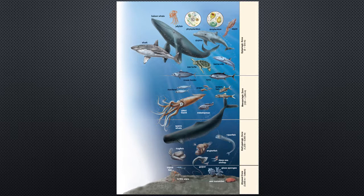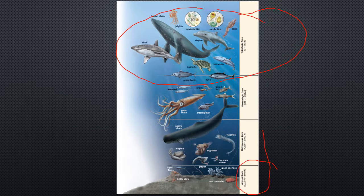The ocean as a biome is divided into different areas: the epipelagic, which is most familiar — where most known fish, phytoplankton, ocean mammals, and sharks live; then the mesopelagic below that; then the abyssal zone; and the benthic area along the bottom.